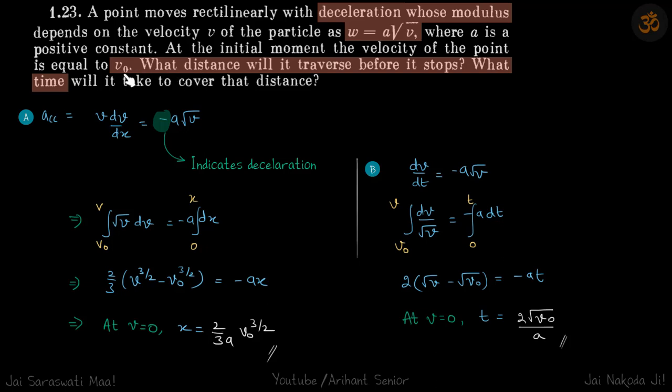So acceleration is v dv/dx equal to minus a√v, where this negative sign indicates deceleration. Now if initially the velocity is given as v₀, we need to find how much distance it will travel before it stops and how much time it will take to do that. Here we wrote acceleration in form of v dv/dx because we have a term of v here, not a term of time.